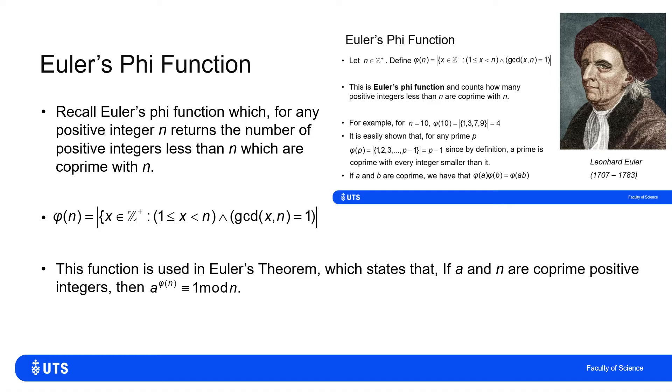And then we used that to establish Euler's theorem, which said that if I had two positive integers a and n which were coprime, then a to the power phi n was equivalent to 1 mod n. So a to the phi n would leave a remainder of 1 when divided by n.